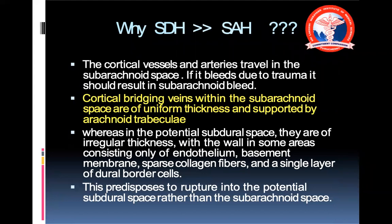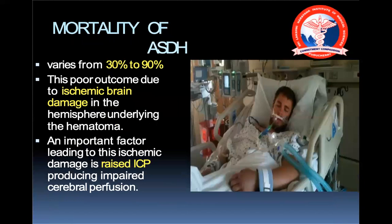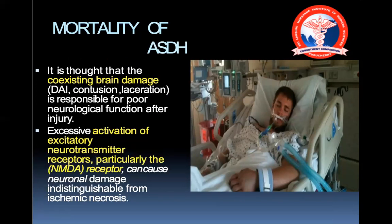Cortical bridging veins within the subarachnoid space are of uniform thickness and supported by the arachnoid trabeculae, explaining why SDH is more common than traumatic SAH. Mortality in acute SDH varies between 30 to 90%. Poor outcome is due to ischemic brain damage in the hemisphere underlying the hematoma — the most important factor being raised intracranial pressure producing impaired cerebral perfusion. Coexisting DAI, contusion, and laceration are responsible for poor neurological function. Excessive activation of excitatory neurotransmitter receptors, particularly the NMDA receptor, can cause neuronal damage indistinguishable from ischemic necrosis.